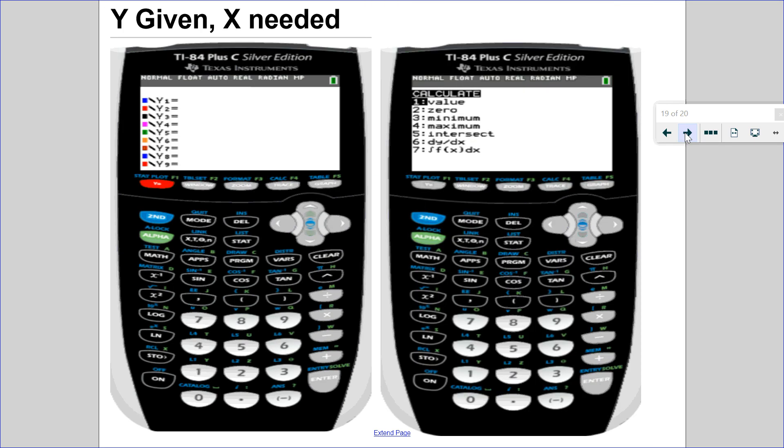The second type of problem is the y given x needed problem. So this should look familiar because this is how we solved for x-intercepts. So in x-intercepts, y is zero and we want to find the x values.